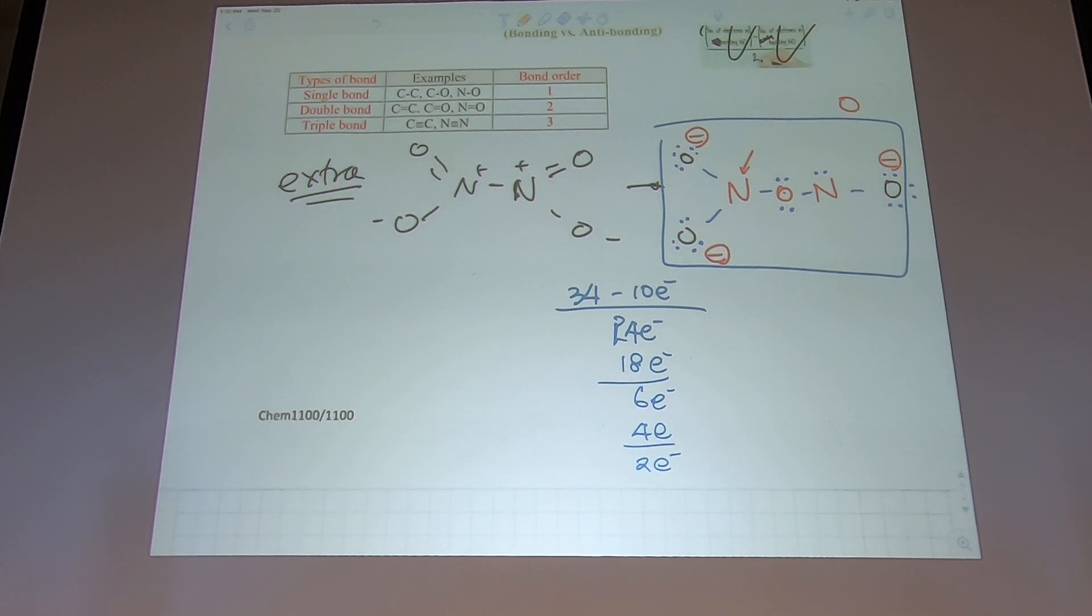This one? This one? Should be five, three bonds, right? So plus two.